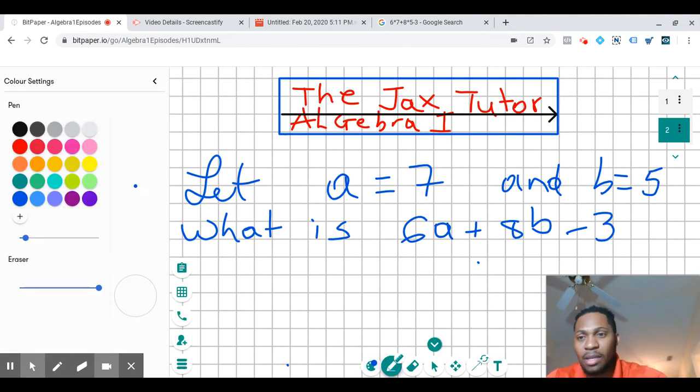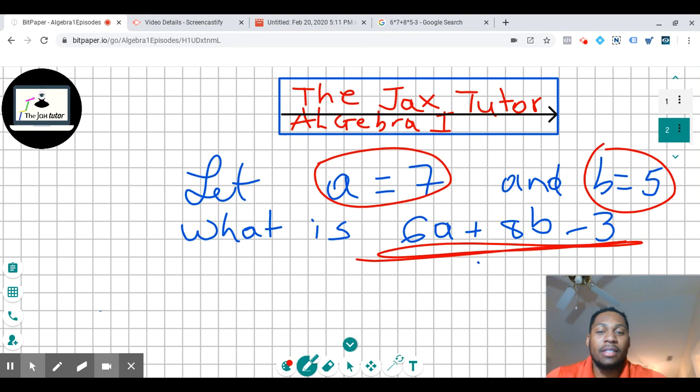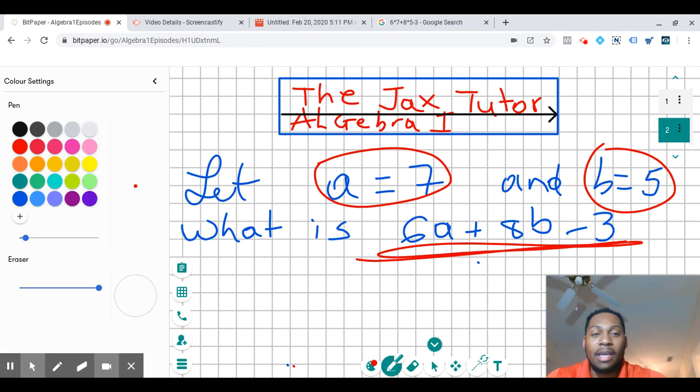So in this case, we have a is equal to 7, and we have b is equal to 5, and we have this whole expression right here. They ask us to evaluate and say, hey, what is 6a plus 8b minus 3? All right, let's get it going.